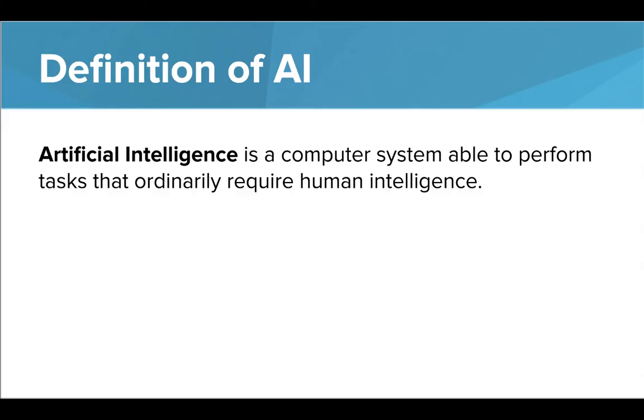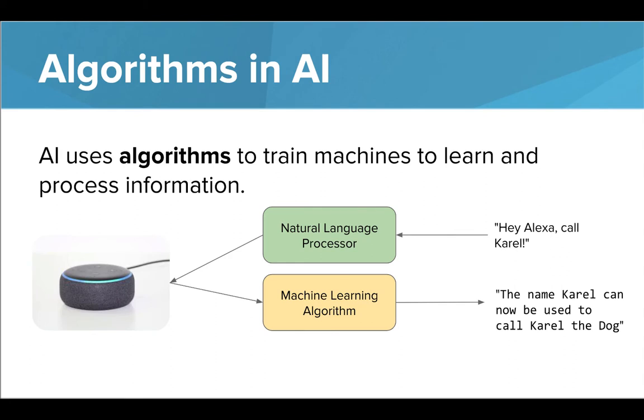In the last lesson, we learned that artificial intelligence is a computer system that is able to perform tasks that ordinarily require human intelligence. We learned that AI is created using algorithms, which train computers how to learn and process information.